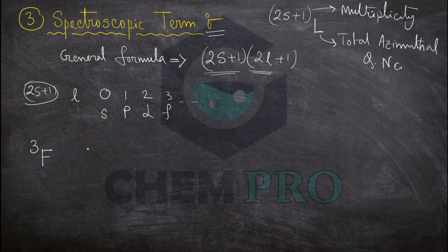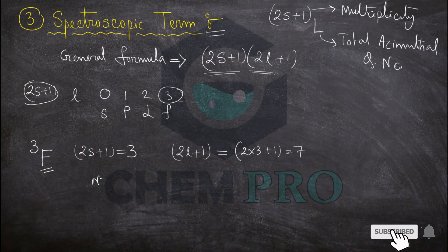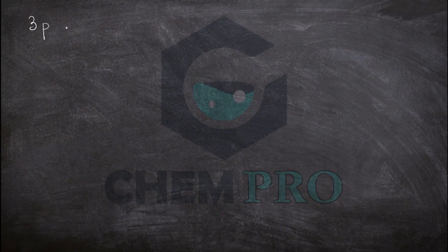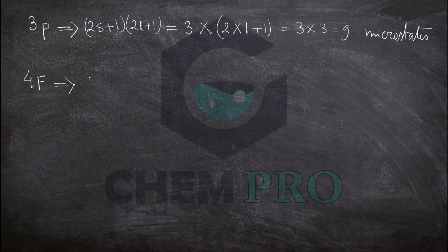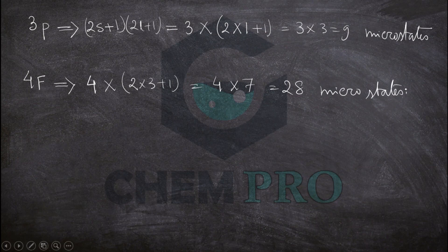For spectroscopic term 3F: 2S+1 = 3, and for F, L = 3 so 2L+1 = 7. Microstates = 3 × 7 = 21. For 3P: 2S+1 = 3, L = 1 so 2L+1 = 3. Microstates = 3 × 3 = 9. For 4F: 2S+1 = 4, L = 3 so 2L+1 = 7. Microstates = 4 × 7 = 28.